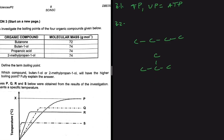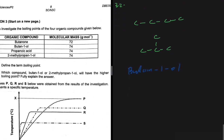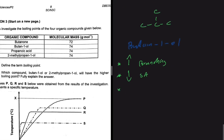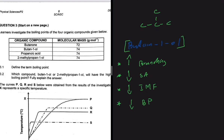To answer this question you need to know the relationship between branching, surface area, intermolecular forces, and boiling point. Butan-1-ol will have the higher boiling point because an increase in branching decreases the surface area, which decreases the intermolecular forces. If intermolecular forces decrease, less energy is required to overcome them, and consequently the boiling point is lower.